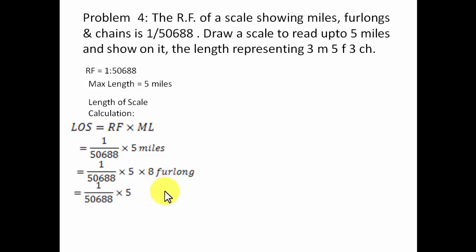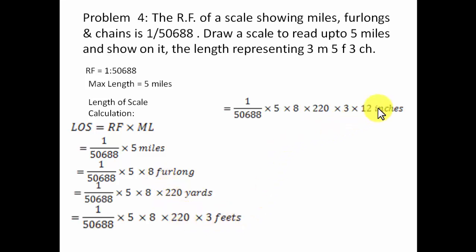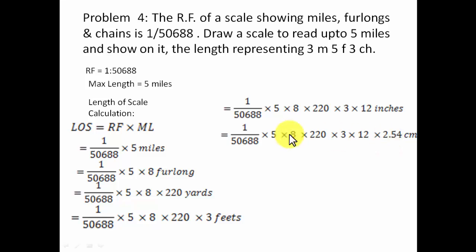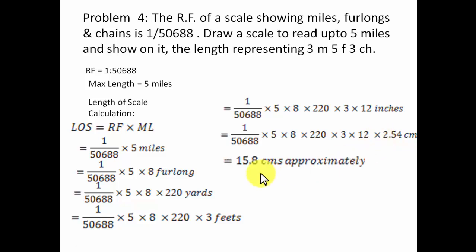One mile is equivalent to eight furlongs, one furlong is equivalent to 220 yards, one yard equals three feet, one foot equals twelve inches, and one inch equals 2.54 centimeters. After performing all these conversions with a calculator, the length of scale works out to approximately 15.8 centimeters.